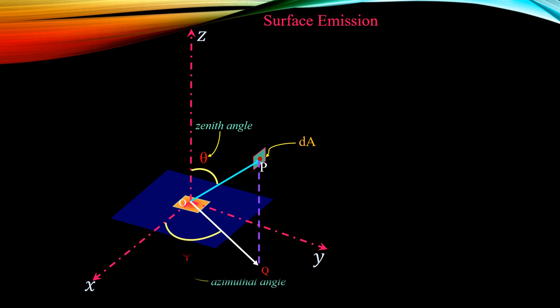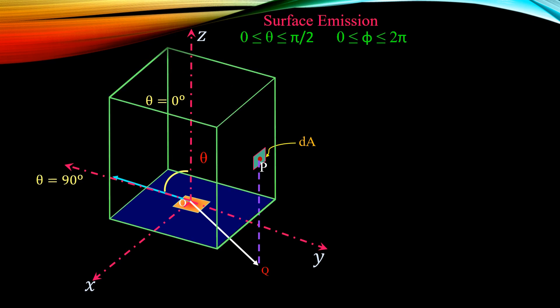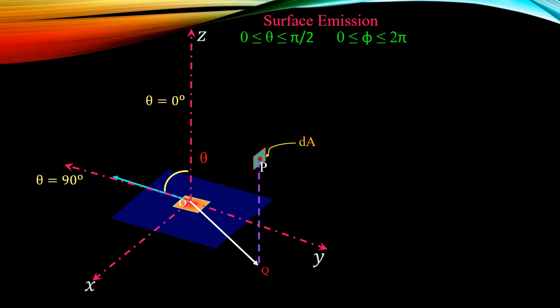Now let's understand how theta varies from 0 to π/2. If we move the line joining points O and P towards the z-axis, the theta angle decreases to 0 degrees. It is important to remember that the theta angle is always measured from the z-axis. If we move away from the z-axis, theta increases and reaches 90 degrees at the y-axis.